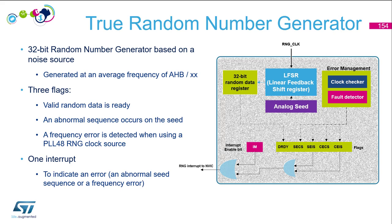At the output, we have three flags and one interrupt. We can enable the interrupt, and there is a flag indicating that a valid random number is ready. There is also a sequence error flag on the linear feedback shift register, meaning something abnormal is detected — a regular pattern at the output, so it's not a true random number. Do not use the value generated when this kind of error occurs.